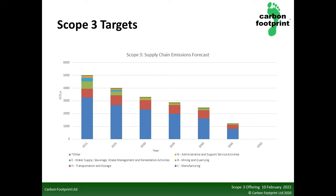As you can see, up until 2040 emissions gradually decrease, then after this point they decrease down to zero at 2050. We believe this will be the case, as once we get to this point there should be plenty of carbon neutral organisations that you can swap your supply chain to.